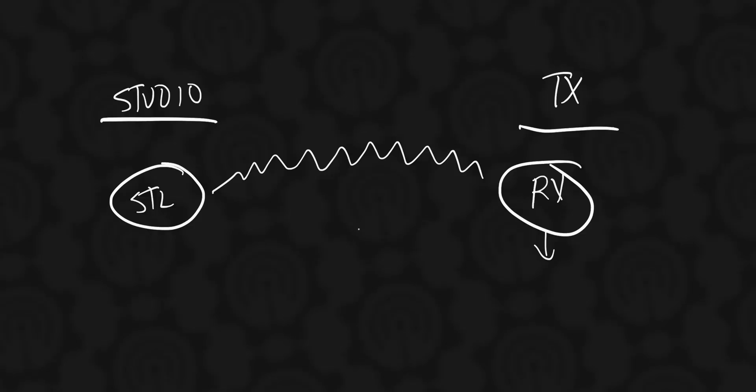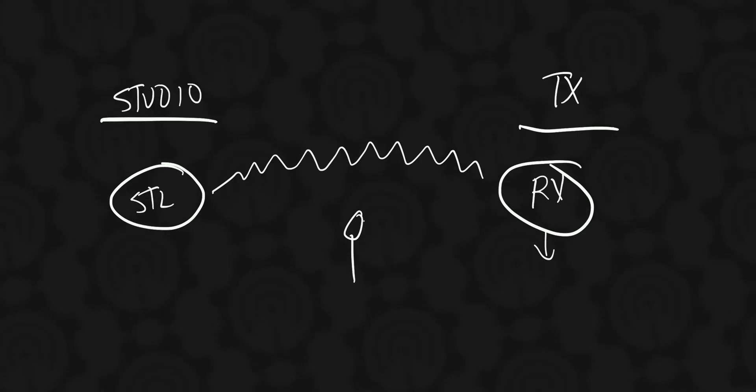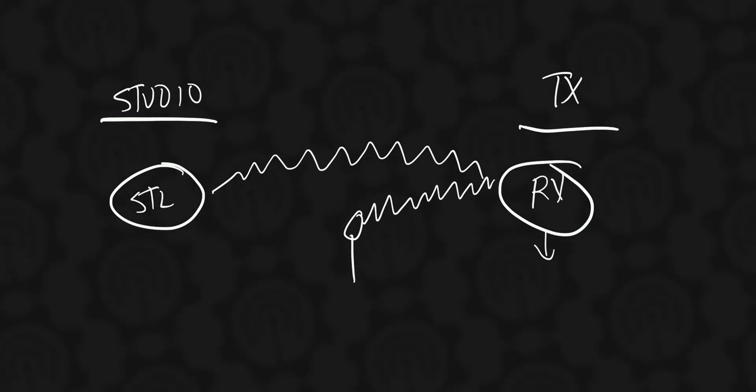That was the old school way of doing it. If this were an analog STL path, if somebody were to set up a little antenna in the path and transmit into their STL receiving antenna, well, that would be one way of taking it over. And there really isn't too much you can do to prevent that.